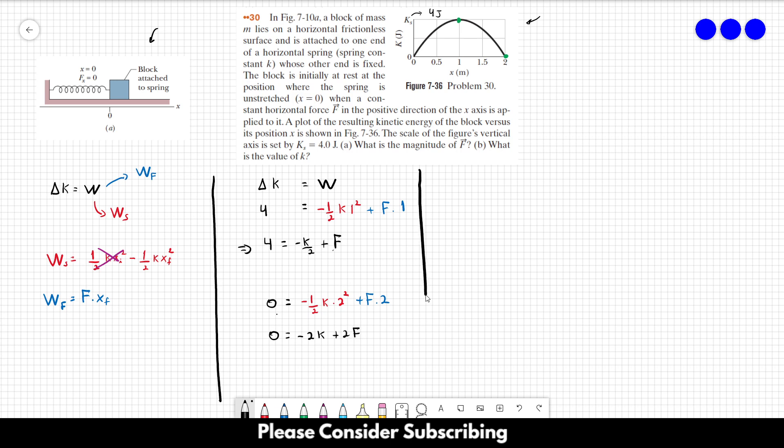Okay, so now we have two different equations, and two things that we don't know. So we have here 4 equals minus k over 2 plus F, and zero equals minus 2k plus 2F. And then we just need to solve those equations, because we have two equations and two things that we don't know. So it's pretty easy to solve.